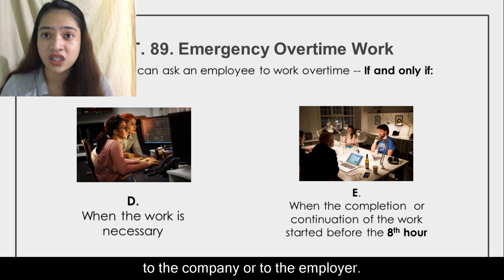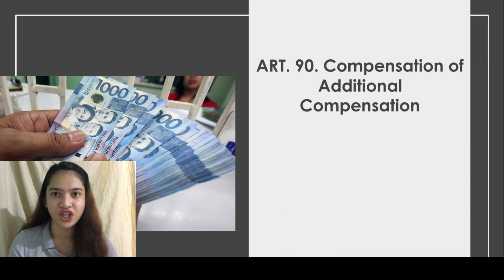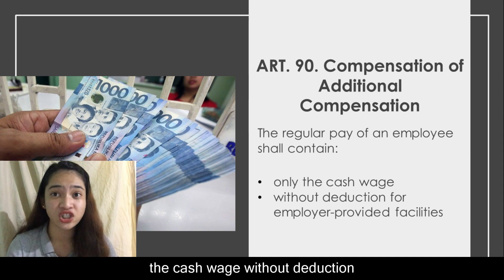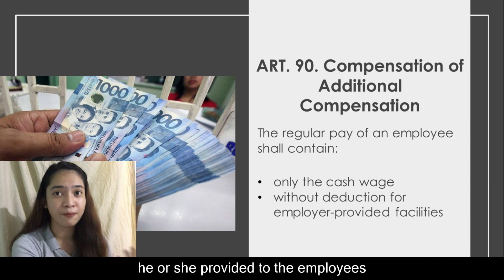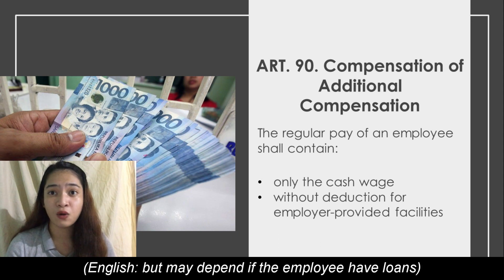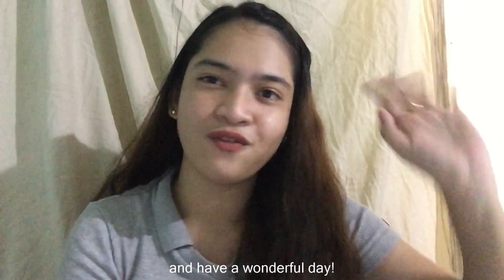Article 90, or computation of additional compensation, states that the regular pay of an employee shall contain only the cash wage without deduction. The employer cannot deduct anything regardless of the facilities that he or she provided to the employee — the employee should receive the full amount. Deductions such as loans would be a separate case and a separate topic. That's it for now. Thank you for listening and have a wonderful day.